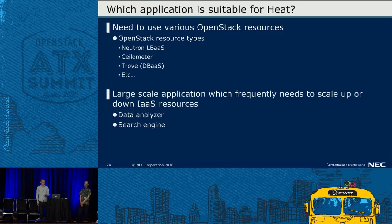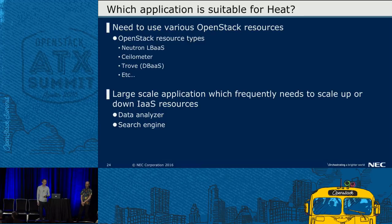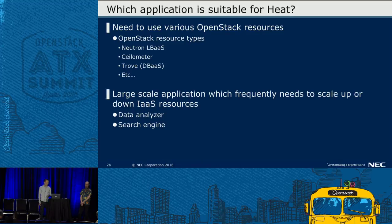As a result, applications which need to use various OpenStack resources are suitable for Heat. OpenStack resource types include, for example, Neutron load balancer services, Ceilometer, and Trove — which is database as a service. Or large-scale applications which frequently need to scale up or down resources, for example, data analyzers or search engines.